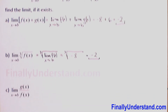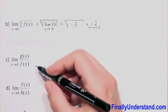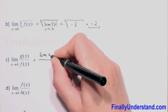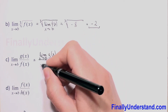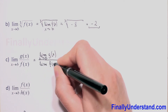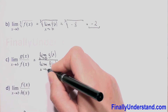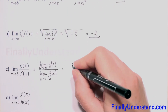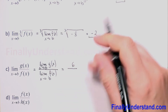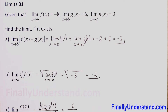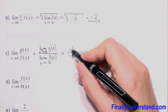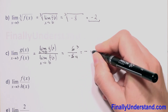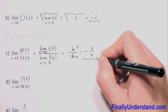Now we have the limit of the quotient g over f. From properties of limits we can rewrite this as the limit of g(x) as x approaches b in the numerator and the limit of f(x) as x approaches b in the denominator. We replace the numerator with 6 and the denominator with negative 8. Positive over negative is negative, and we reduce 6 and 8 by 2, giving us negative 3 over 4.